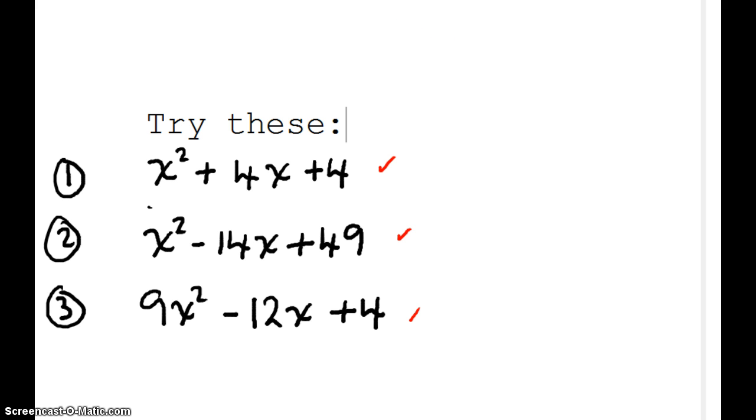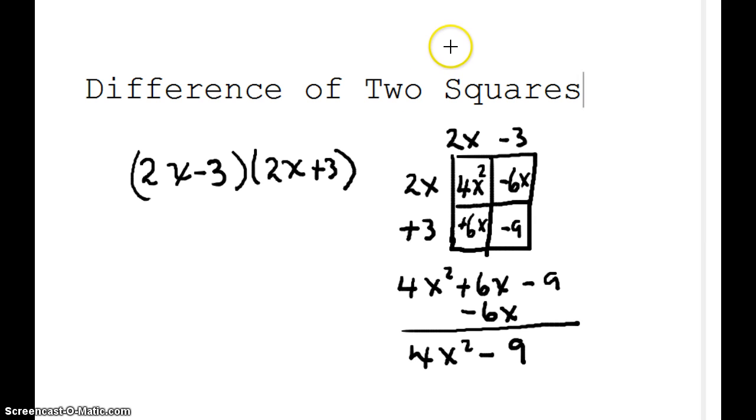The second set of special cases is the difference of two squares. And this occurs when we have a number or a binomial that looks almost the same. And the only difference is that we have a plus and a minus. And you can see how this gets built. We have 2x minus 3 and 2x plus 3. We have my 4x squared. Plus 6 and minus 6. And my minus 9.